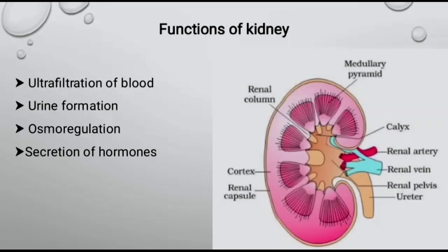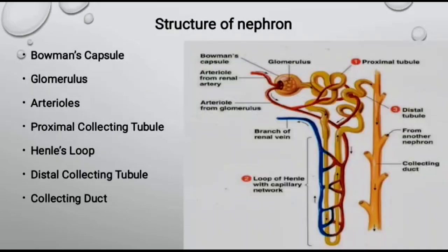This is known as osmoregulation. Kidneys are responsible for the production of hormones like renin, angiotensin, aldosterone, etc., which help to regulate water and salt concentration in the body and thus play a vital role in maintaining blood pressure. Each kidney contains about 1,000,000 nephrons, which are the structural and functional units of the kidneys.